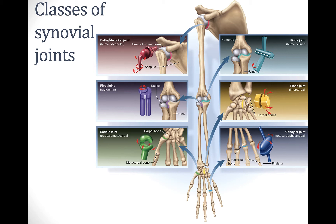The first example is the ball and socket joint, and you have two of these in the body. You're seeing one here at the shoulder. We also have another one at the hip joint where the femur attaches to the hip bone, the coxal bone. The ball and socket joint is multi-axial, meaning it has three axes of rotation — it can rotate in three different directions.